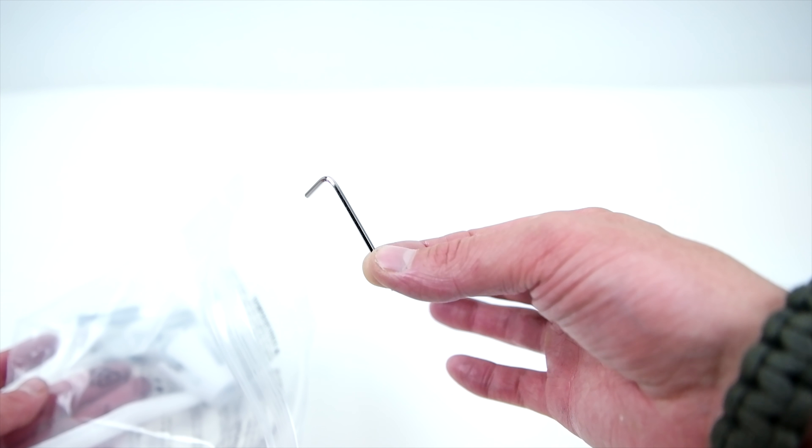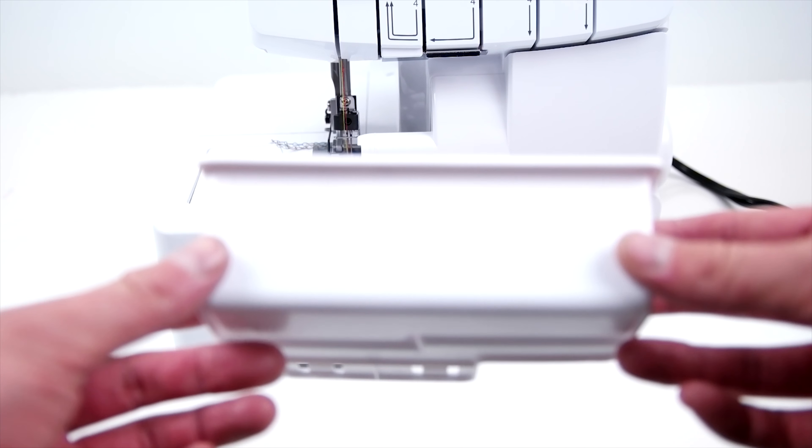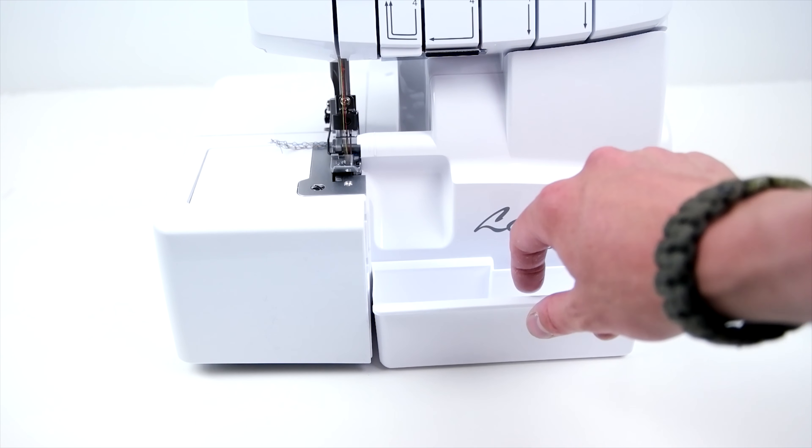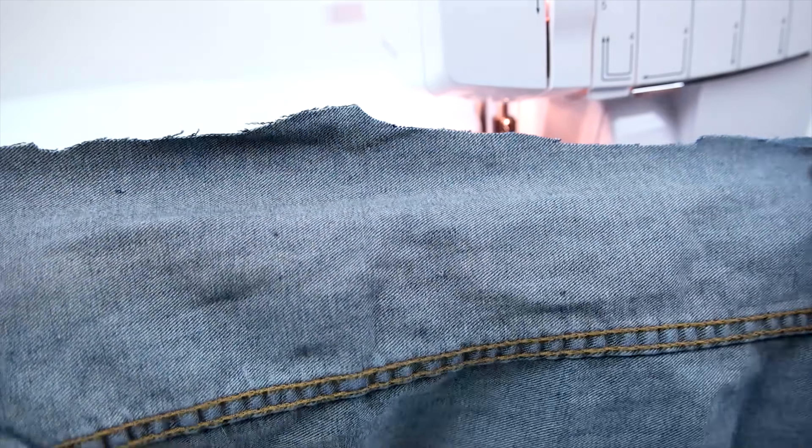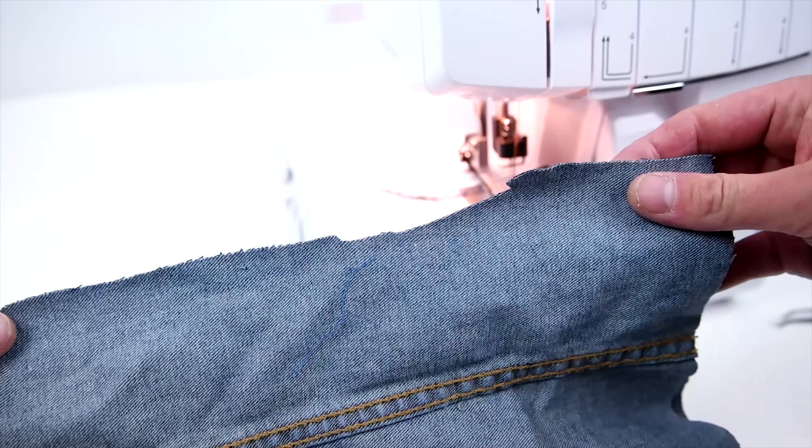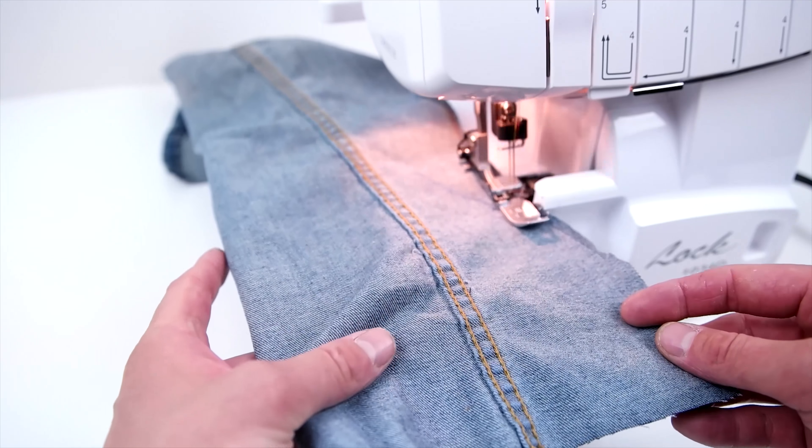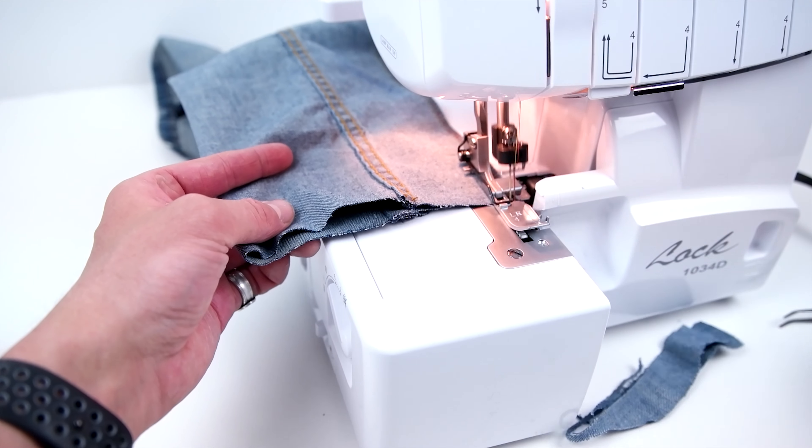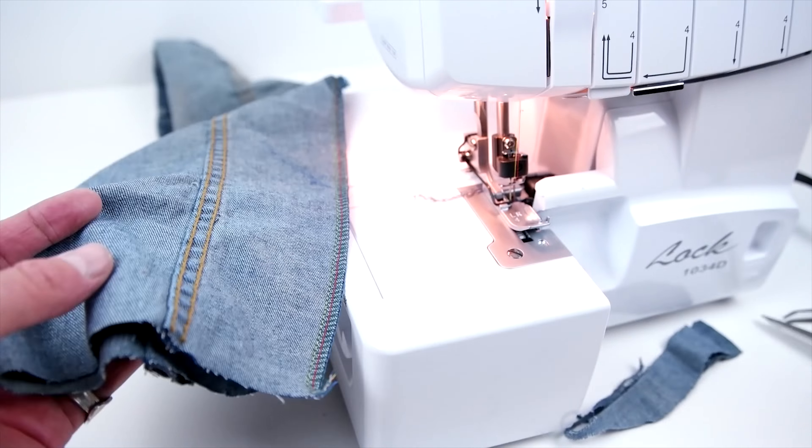Now we're going to test this machine using heavier weight denim. As you can see, that edge is really torn up - we do this to test the knife and the needles. It handled this denim no problem, perfect stitch. With any knitwear like sweatshirt material or jerseys, this machine will do perfectly.